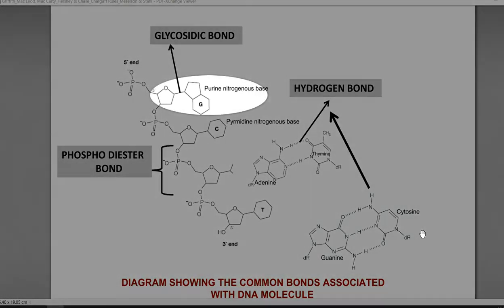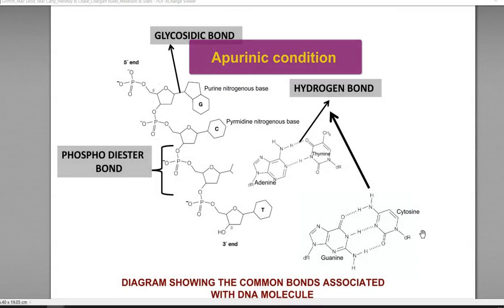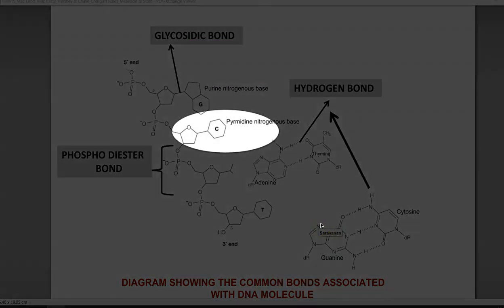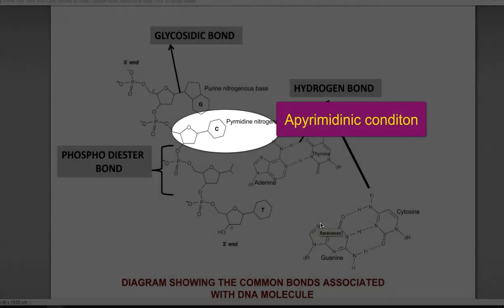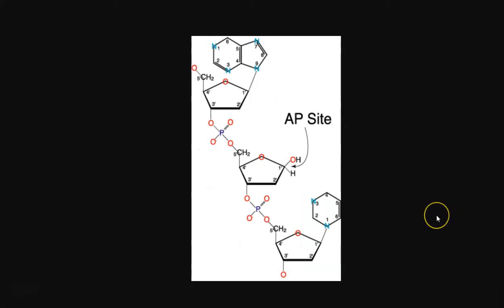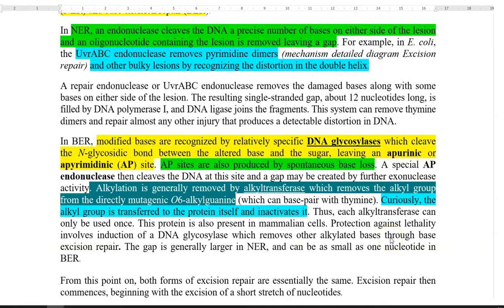In an apurinic or apyrimidinic condition, the phosphodiester bond backbone and the ribose sugar remain present, but the nitrogenous base — purine or pyrimidine — has been removed by the action of the glycosylase enzyme cleaving the glycosidic bond. These apurinic or apyrimidinic sites could also be produced by spontaneous base loss occurring in the cell. A special AP endonuclease then cleaves the DNA at this site, and a gap may be created by further exonuclease activities.